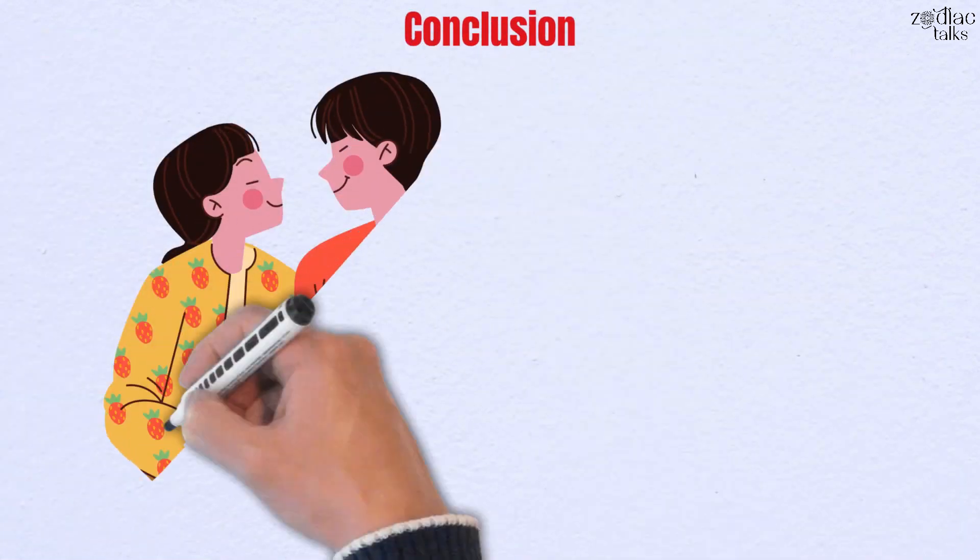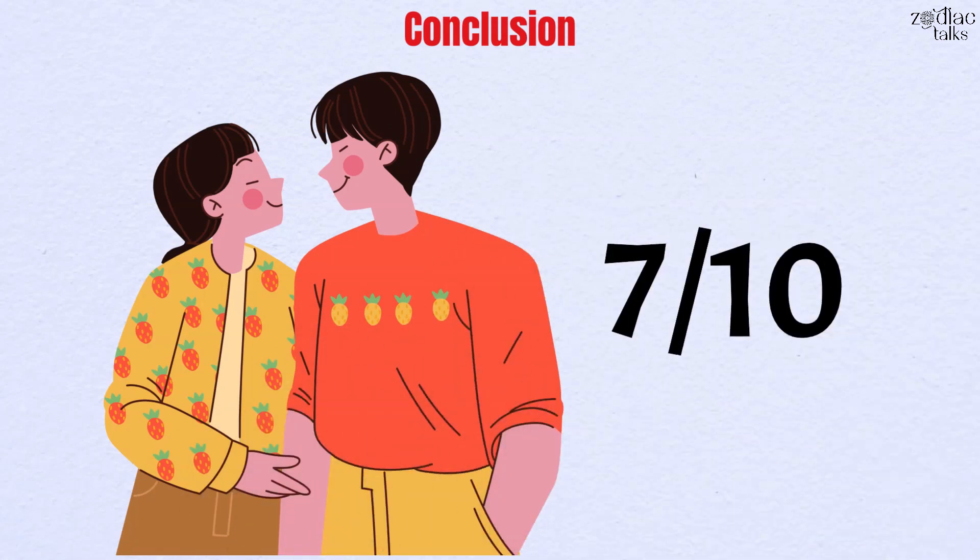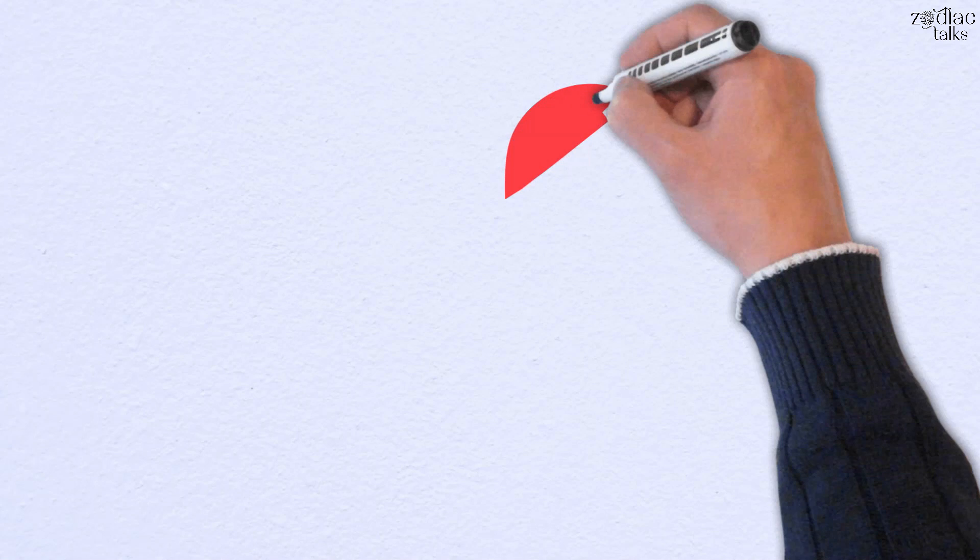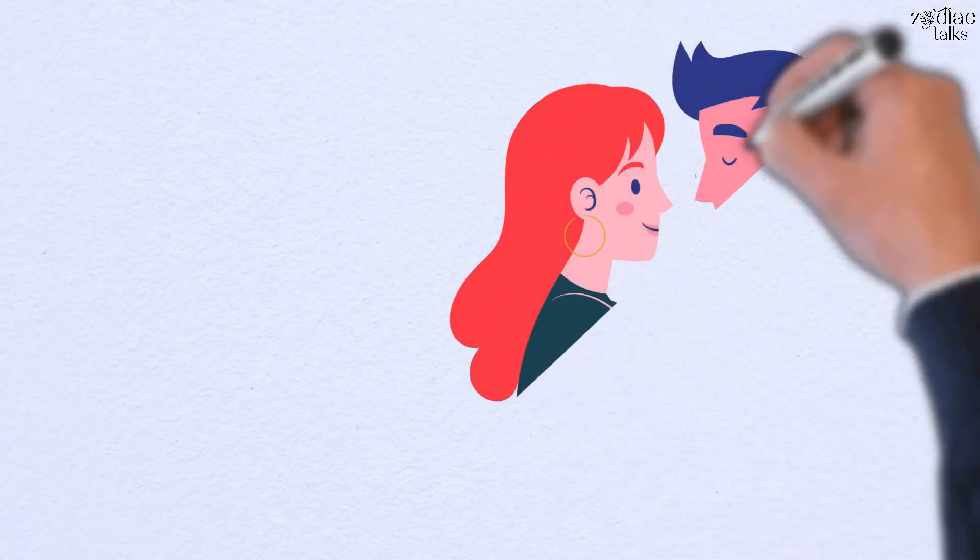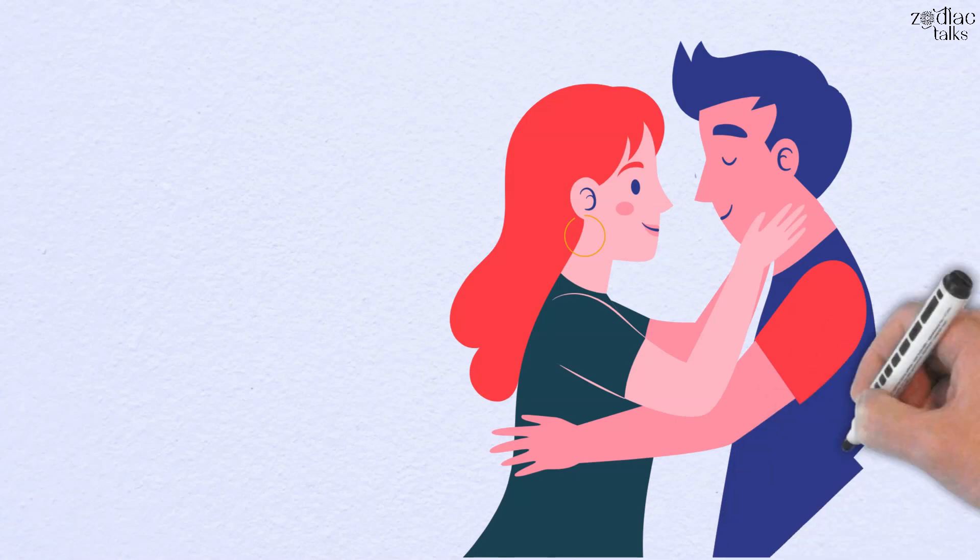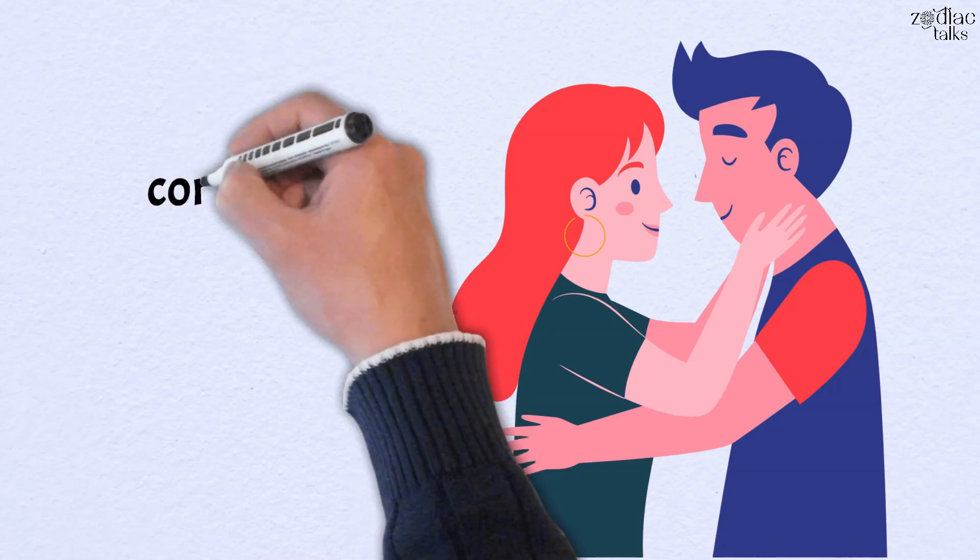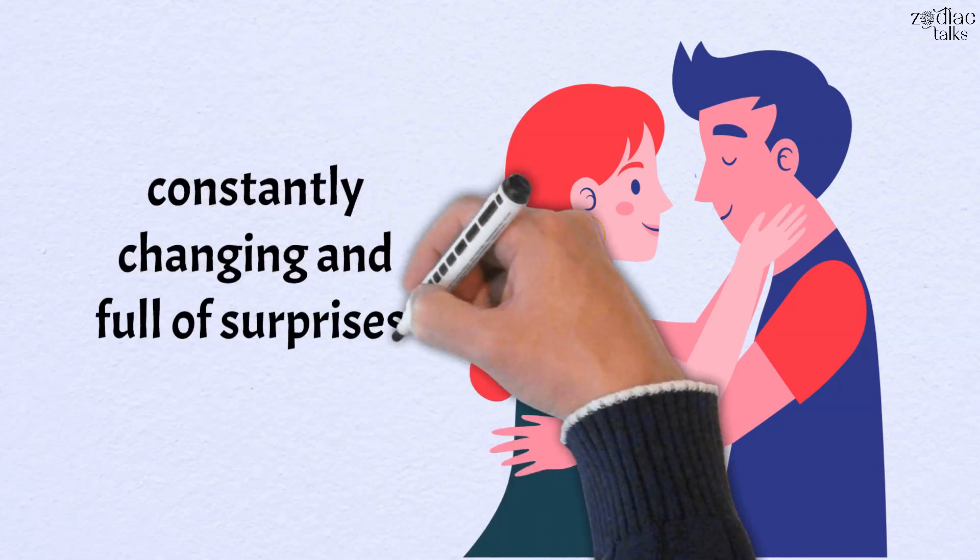Conclusion. On a scale of 1 to 10, the overall compatibility for the Taurus Woman and Gemini Man is a 7. Ultimately, the Taurus Woman and Gemini Man can bring out the best in each other, both individually and as a couple. While she's as stable and dependable as the Earth beneath his feet, he's like a breath of fresh air, constantly changing and full of surprises.